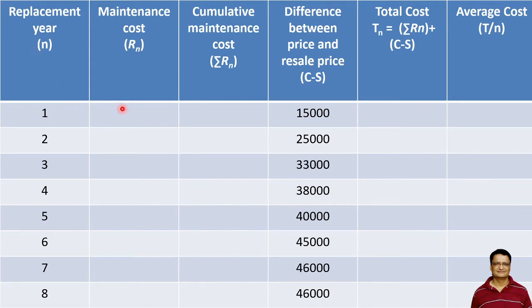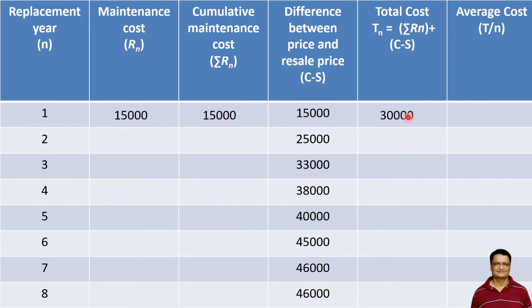For the first year, the maintenance cost is 15,000 as given in the problem statement. The cumulative maintenance cost is also 15,000. Adding C minus S gives a total cost of 30,000. Since there is only one year, 30,000 divided by one gives an average cost of 30,000.